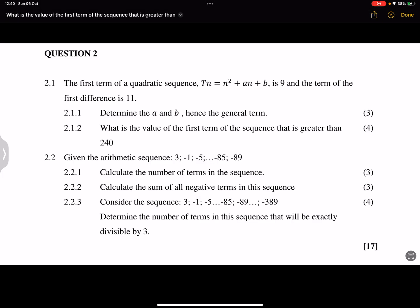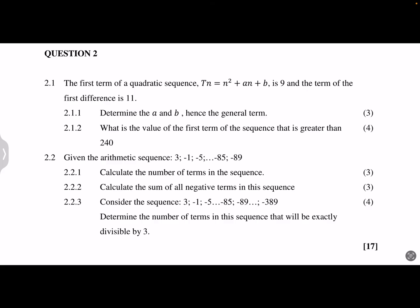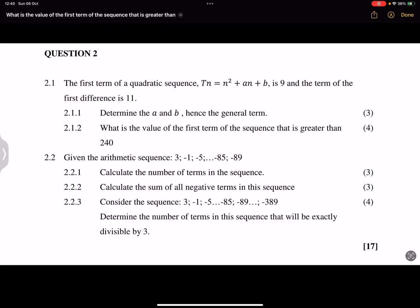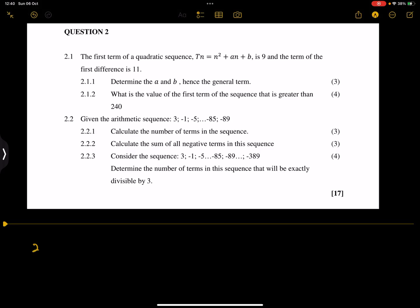Let's look at question two. The general term of a quadratic sequence is Tn = n² + an + b. The first term is 9 and the first difference is 11. We need to determine a and b, and hence the general formula. Note that in this case they've already given us what we normally call our 'a' value, so that means a equals one. We are looking for what we usually term as our b and c values.